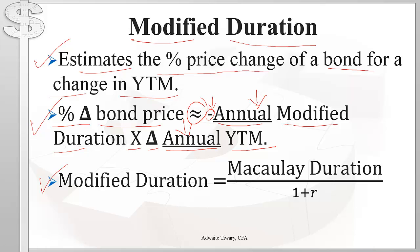Modified duration can be calculated by dividing the Macaulay duration by 1 plus the yield to maturity. Make sure that the yield to maturity and Macaulay duration are expressed in consistent periods — if Macaulay duration is expressed in six-month periods, then the yield to maturity should also be expressed in six-month periods.